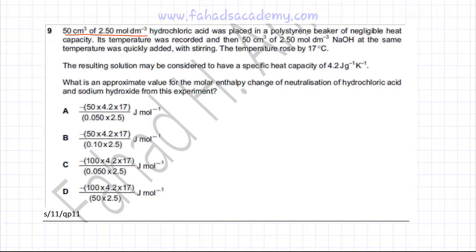so 50 cm³ of 2.5 mol per dm³ hydrochloric acid is being placed in a polystyrene cup of negligible heat capacity and its temperature was recorded. And then 50 cm³ of 2.5 mol per dm³ NaOH at the same time was quickly added with stirring.